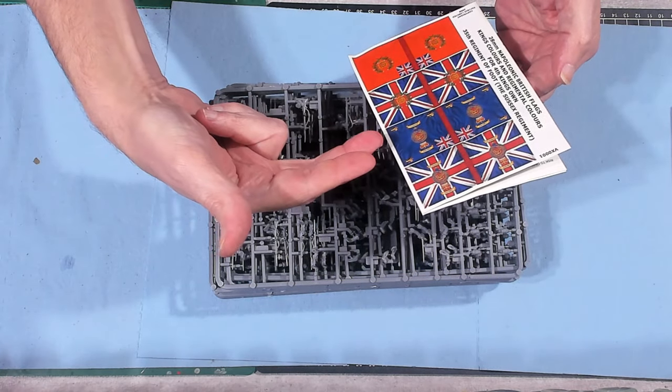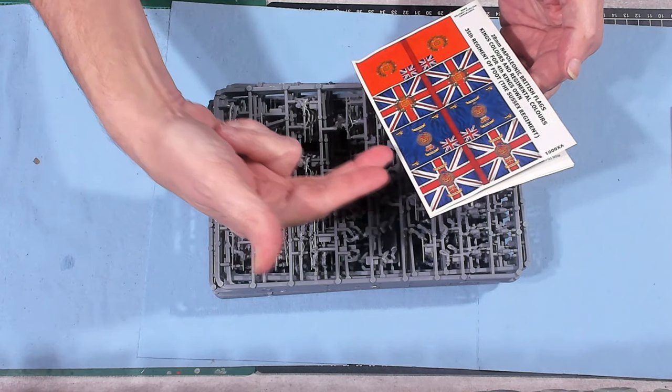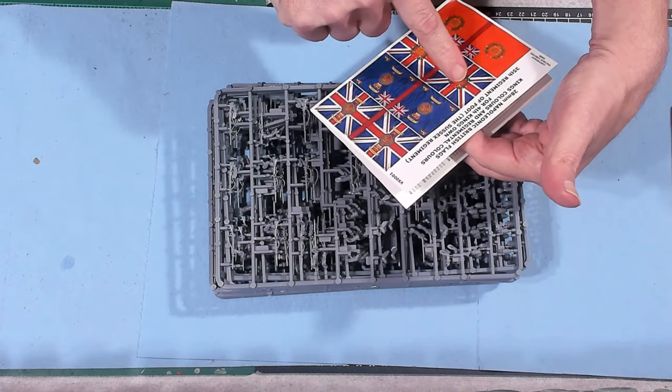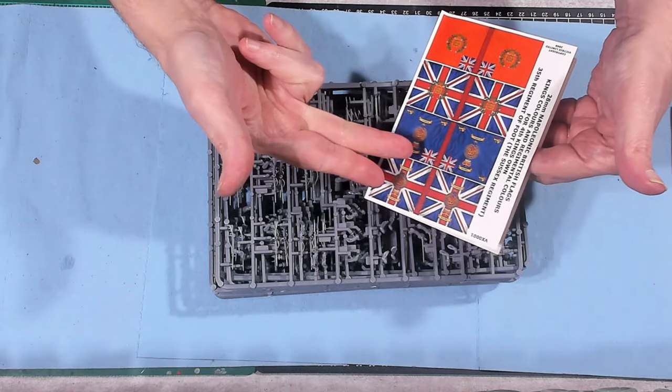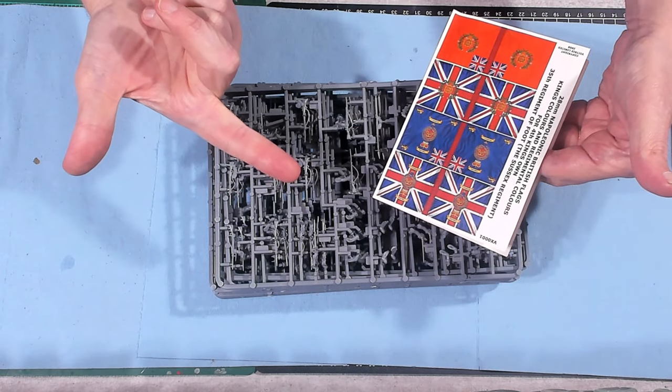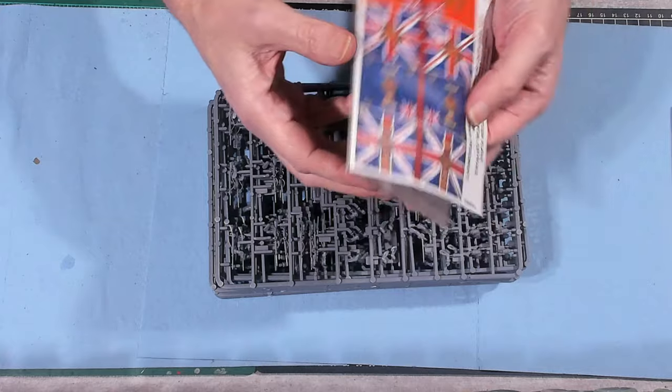Looks like two different units. It looks like maybe that's the fourth where it says it right here. Yeah the fourth king zone and the 30 foot Sussex Regiment.